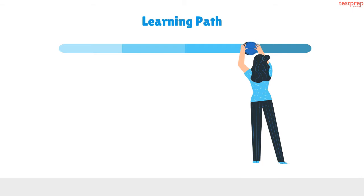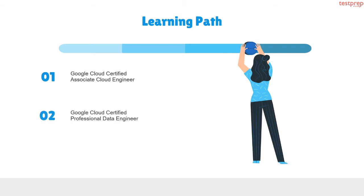These are: first, Google Cloud Certified Associate Cloud Engineer; second, Google Cloud Certified Professional Data Engineer; third, Google Cloud Certified Professional Cloud Architect.